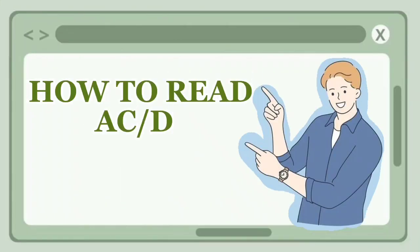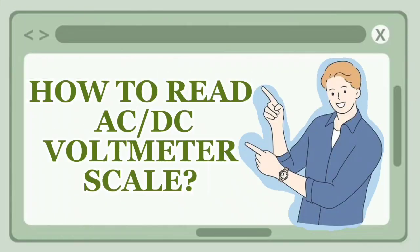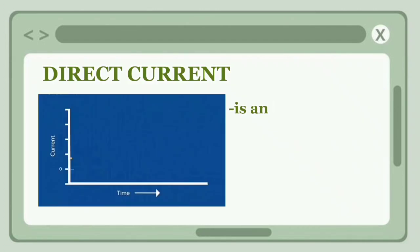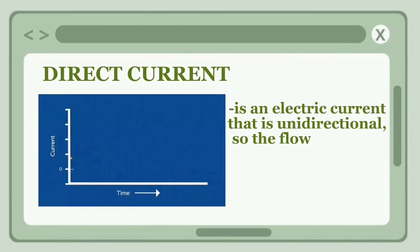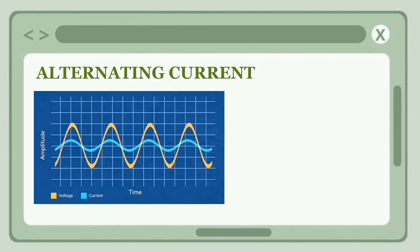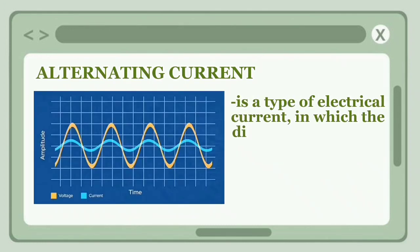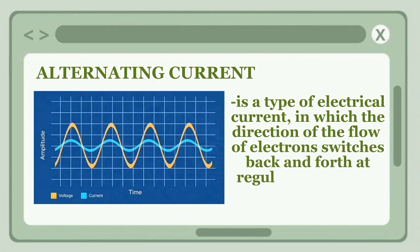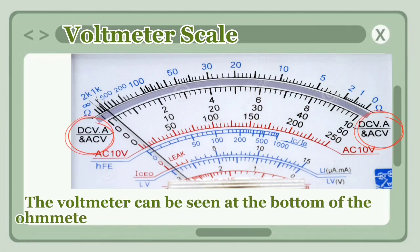How to read AC/DC voltmeter scale. Direct current is an electric current that is unidirectional, so the flow of charge is always in the same direction. Alternating current is a type of electrical current in which the direction of the flow of electrons switches back and forth at regular intervals or cycles. The voltmeter can be seen at the bottom of the ohmmeter with reflected DCV and AC V bar at both ends.